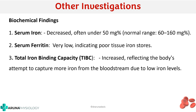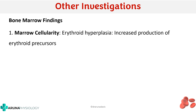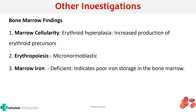Bone marrow aspiration in iron deficiency anemia shows erythroid hyperplasia — the number of erythroid precursor cells is increased compared to myeloid cells, as the marrow responds to chronic anemia. The precursor cells are much smaller than normal, called micronormoblasts. Marrow iron stores will also be deficient, indicating poor iron storage in the bone marrow.